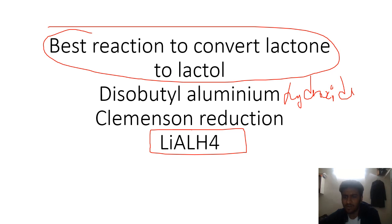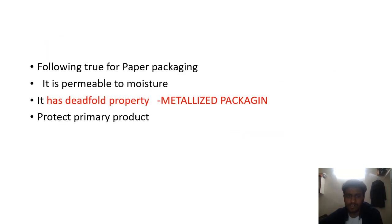Which of the following is true for paper packaging. Paper, of course, protects the primary product - it is a primary packaging, but it does not protect to that extent. It just covers. It is permeable to moisture - yes, of course, moisture can permeate through paper.